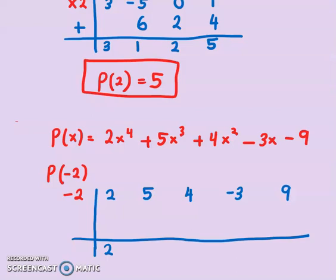b₄ here will be exactly 2 here. So 2 times -2 is -4. Add them: 5 + (-4) = 1. 1 times -2 = -2. Add them: 4 + (-2) = 2. 2 times -2 = -4.